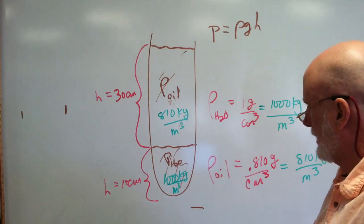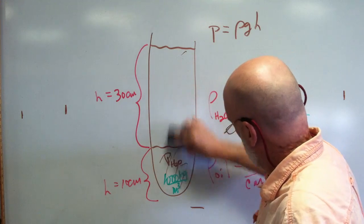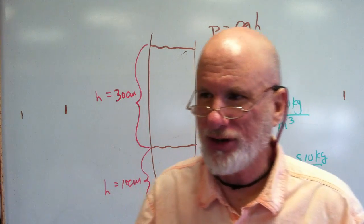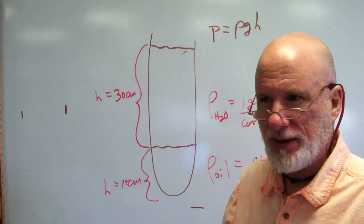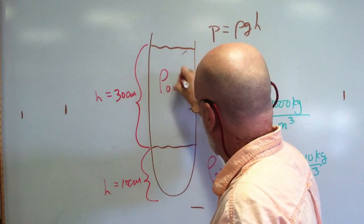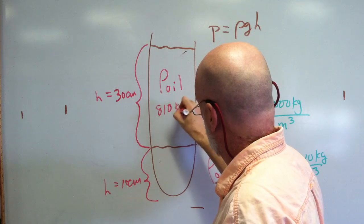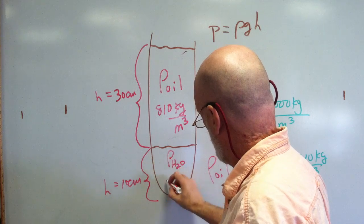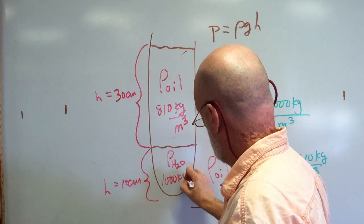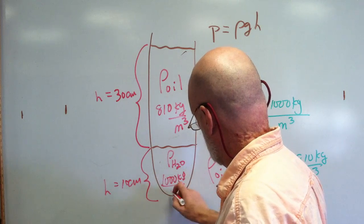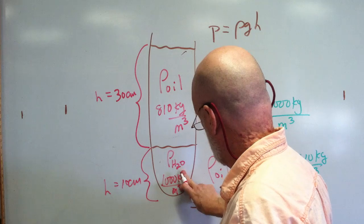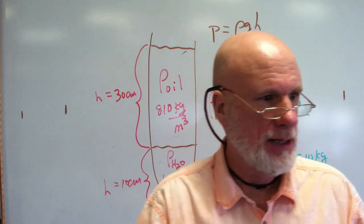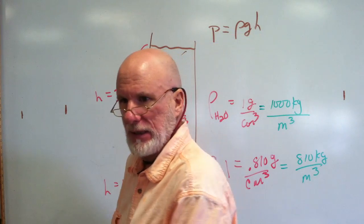Rewriting on the diagram with some brown streaking to indicate liquid — this layer is oil and this layer is water. So we have water at 1,000 kg/m³ and oil at 810 kg/m³.